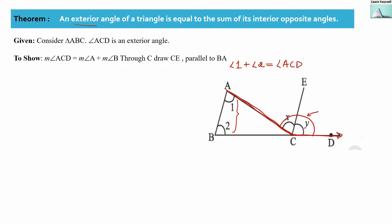This exterior angle comprises of x and y. Consider triangle ABC. ACD is an exterior angle, as shown here — ACD complete is an exterior angle. What we have to show is that the measure of angle ACD, that is the exterior angle, will be equal to the measure of angle A and the measure of angle B, where measure of angle A is angle 1 and measure of angle B is angle 2.